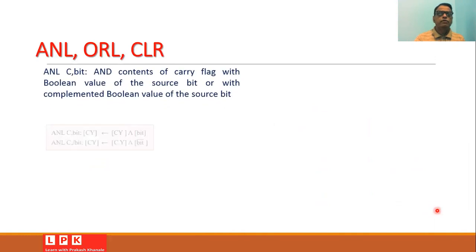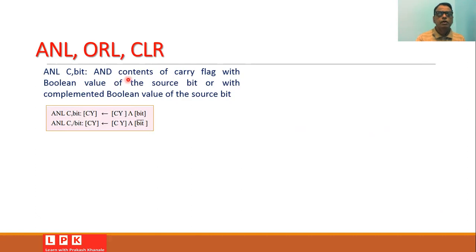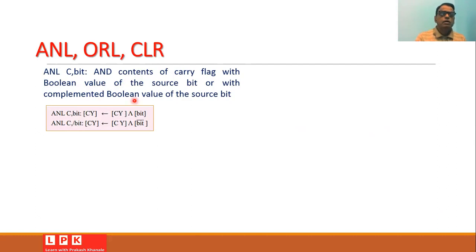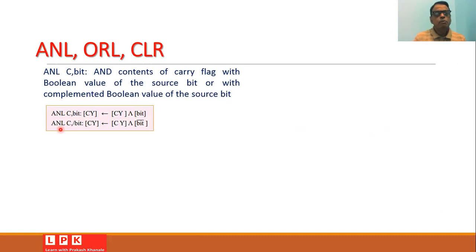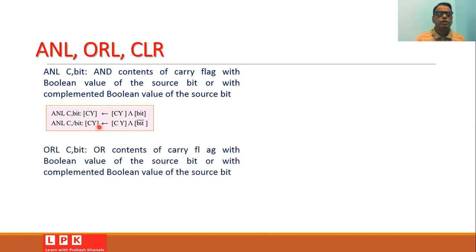The first instruction is ANL C, bit. This instruction logically ANDs the content of the carry flag with the boolean value of the source bit — or with the complemented boolean value of the source bit. If you write ANL C, bit, the carry is ANDed with the source bit and the result is stored in the carry. If you write ANL C, /bit (forward slash bit), the carry is ANDed with the complement of the bit, and the result is stored in the carry.